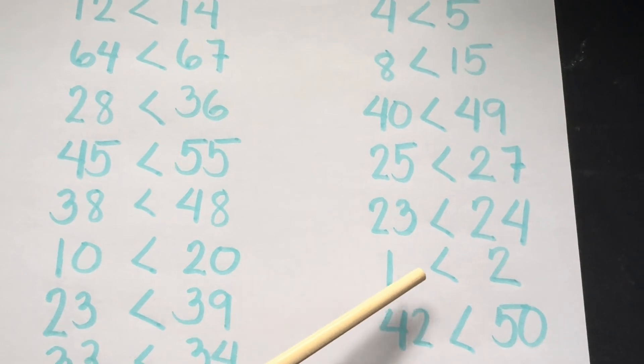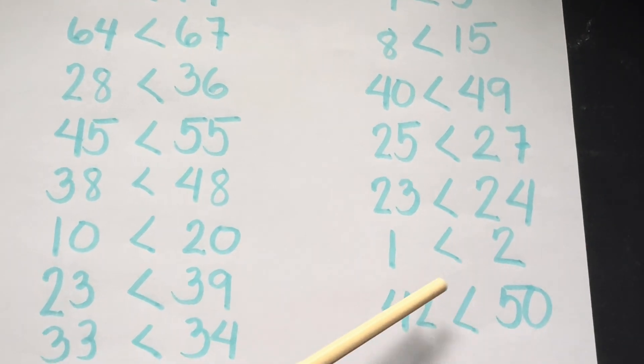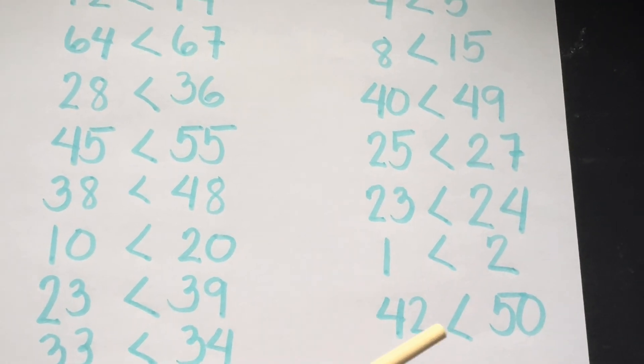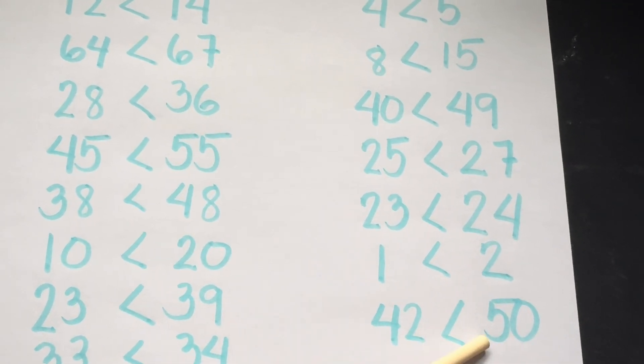One is less than two. And lastly, forty-two is less than fifty.